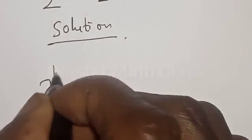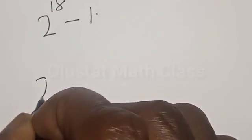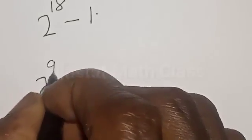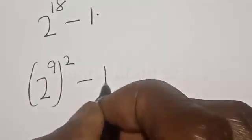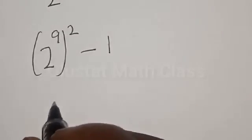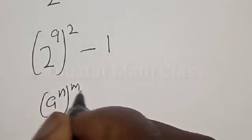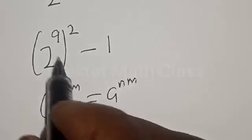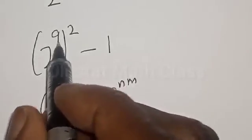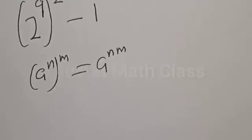2 raised to power 18 is the same as 2 raised to power 9, raised to power 2, minus 1. Remember, if you have a raised to power n, raised to power m, that is the same as a raised to power n times m. So 9 times 2 gives you 18 back.